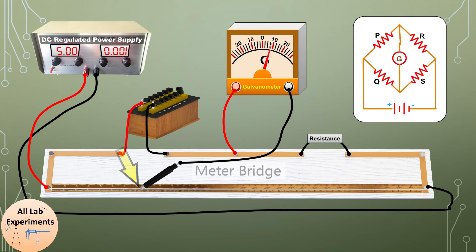Now we will place our jockey on this conducting wire which is attached with a meter scale on this bridge. As we touch this you will find that the galvanometer is showing a deflection in one direction. If we put it at another place, we can find that the deflection is towards the other side of the galvanometer.